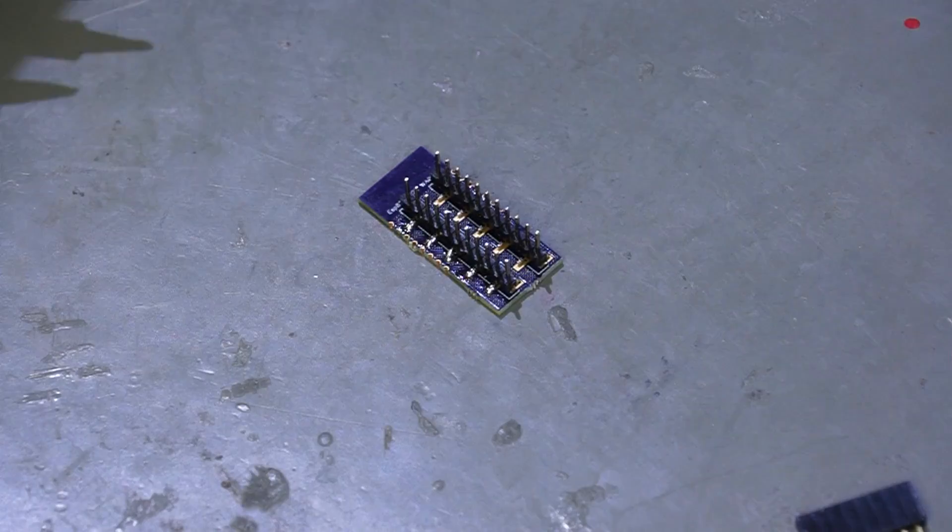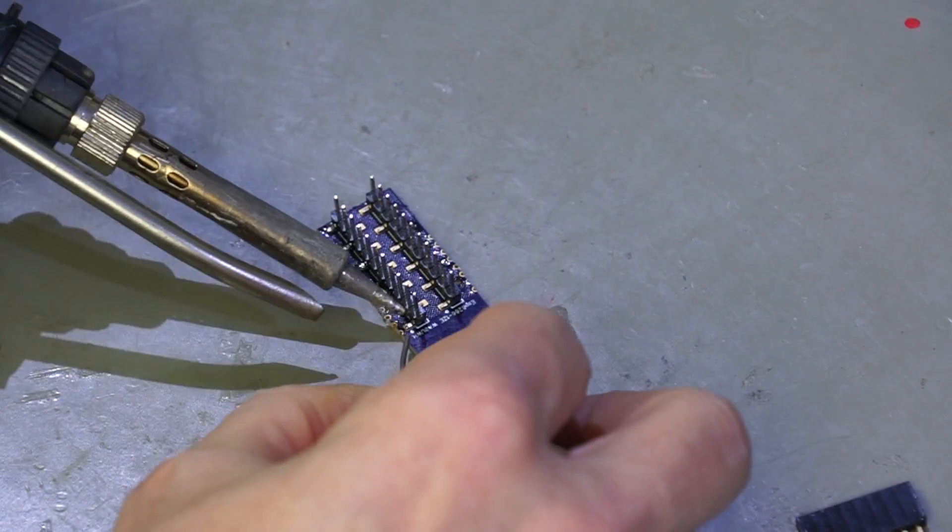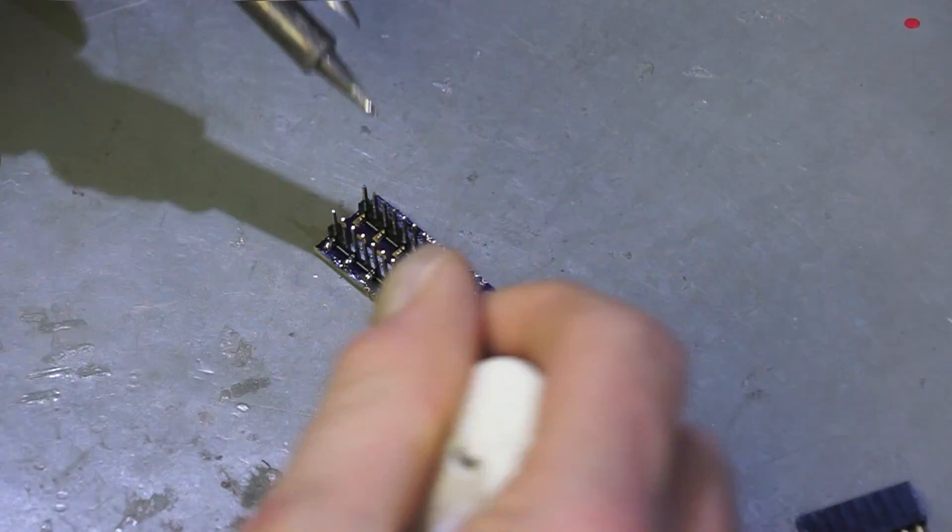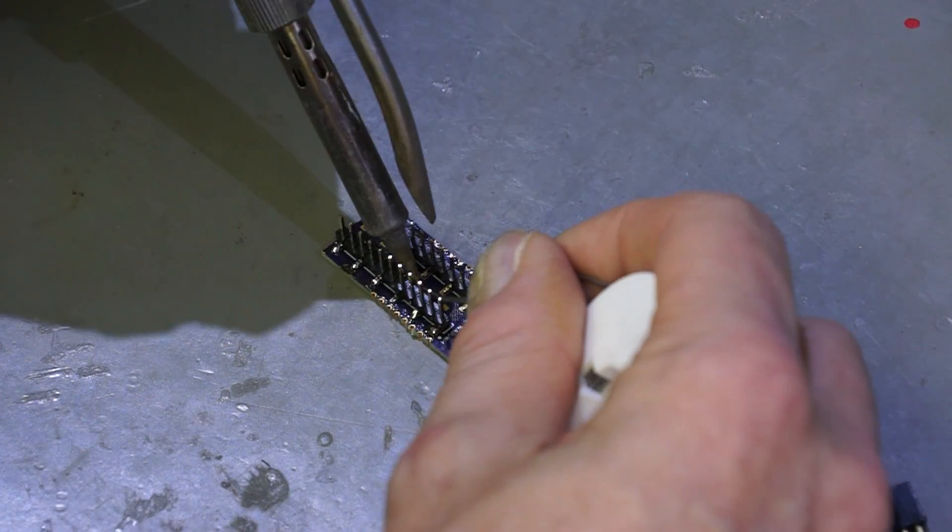As a second step, I soldered the SMT pin headers to the bottom of the board. Because they are so narrow, this is also not easy, but also possible.